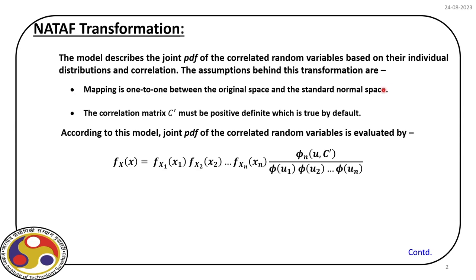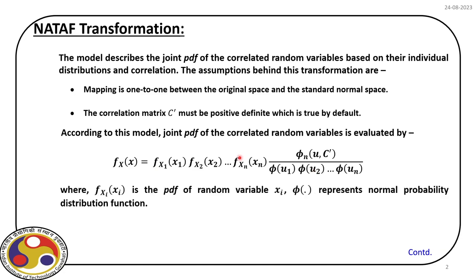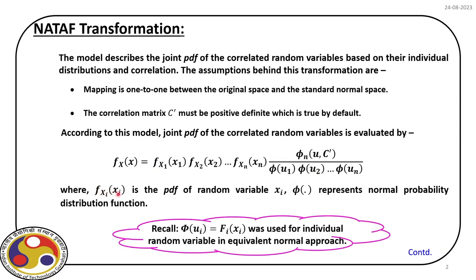Note that sometimes small u is also used for uniform distributions, but in this case u represents standard normal variables. For every xi we will see how we get the corresponding ui. The relation between ui and xi is what we used earlier for equivalent normal transformation — for every xi there is a corresponding ui, and that is how we developed the isoprobabilistic transformation using the equivalent normal approach.